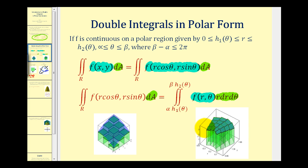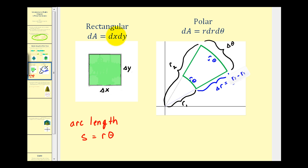Let's take a look at these two graphs. Notice in rectangular form, we were determining the volume of boxes where the bases were squares. In polar form, we still want to determine the volume of these boxes, but the bases aren't quite rectangular, so it's going to take a modification of the formula to determine differential A. In rectangular form, differential A was equal to dx times dy, because this represented the area of a base which was a square or rectangle.